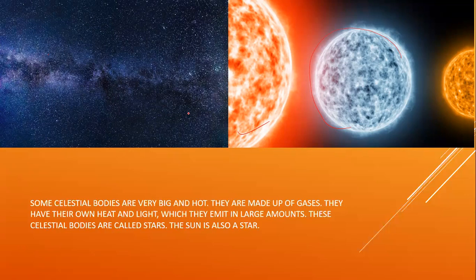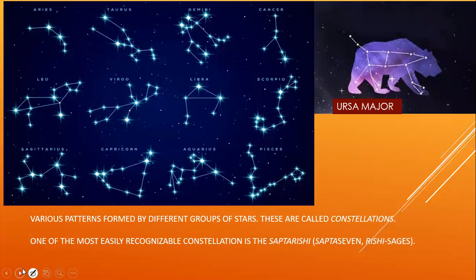So what is the definition of a star? Some celestial bodies are very big and hot. They are made up of gases and have their own heat and light, which they emit in large amounts. These celestial bodies are called stars. Stars are so far from us — you can't imagine how far. That's why they appear so small to us, just like a plane looks small when it's far away. The celestial bodies which have their own heat and light and which emit heat and light in large amounts are called stars. Our sun is also a star.